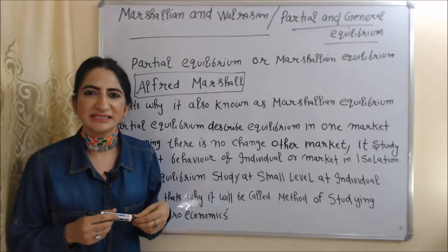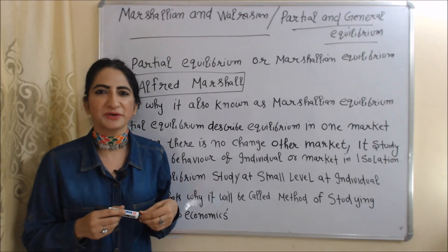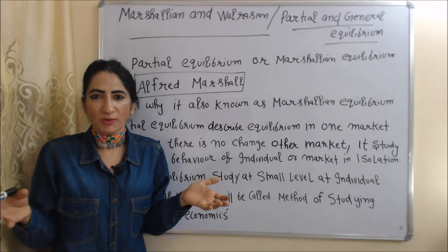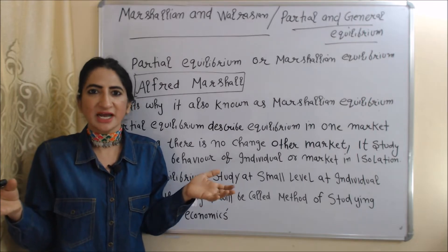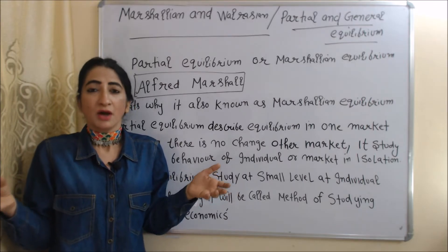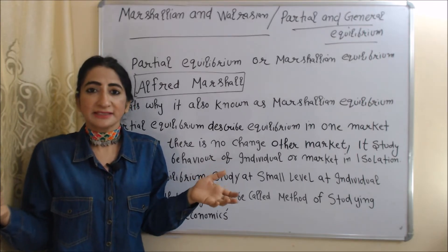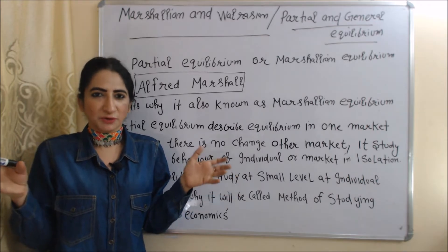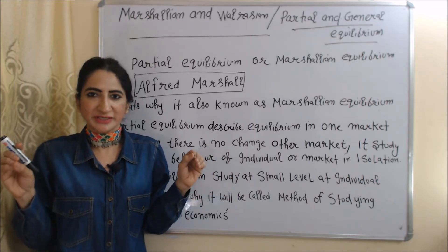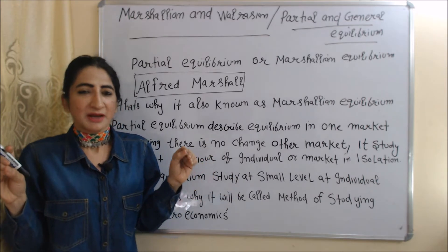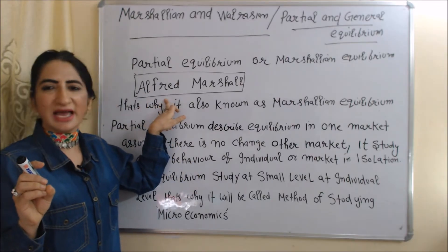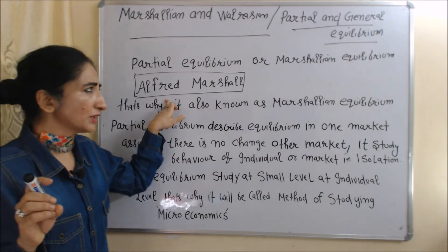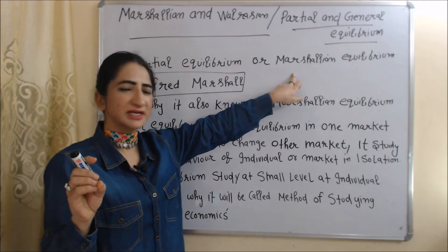Hello everyone, my name is Minis Ethi. I hope you all are staying healthy. Today we are going to talk about Marshallian and Walrasian equilibrium, or we can say partial and general equilibrium. First of all, we are going to talk about partial equilibrium, which is given by Alfred Marshall — that's why it is also known as Marshallian equilibrium.